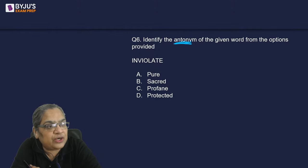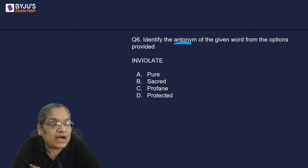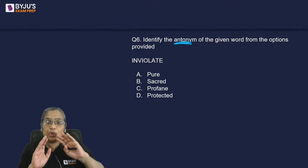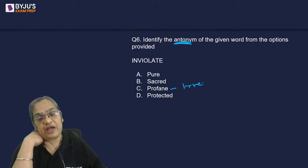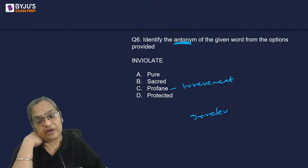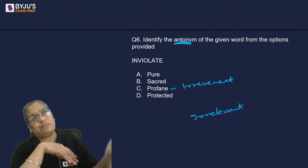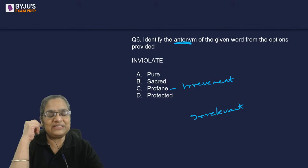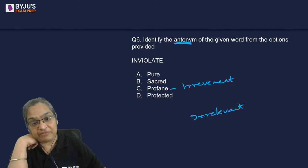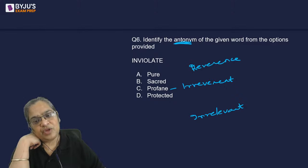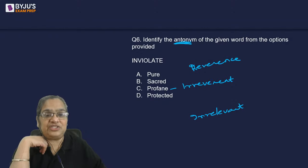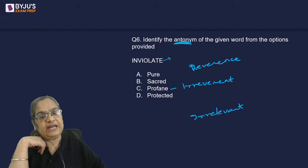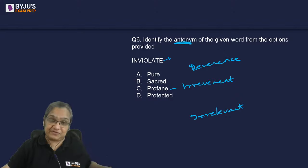I can see a lot of answers for C. What is the meaning of profane? Inviolate means something that is pure, something totally protected, that hasn't been marred or spoiled. So the opposite is 'profane,' which means irreverent — not the same as irrelevant. Irrelevant means outside the topic; irreverent means disrespectful. Profane means blasphemous, sacrilegious, disrespectful. Inviolate means sacrosanct.